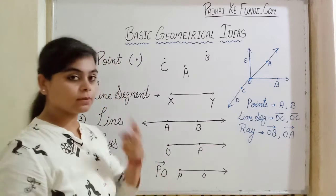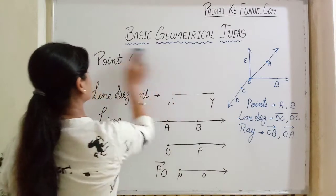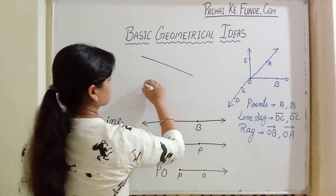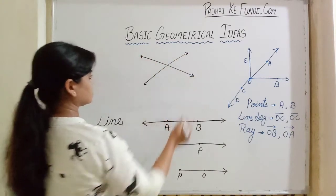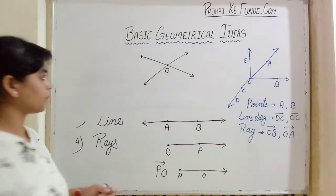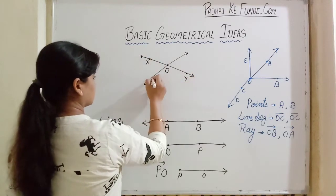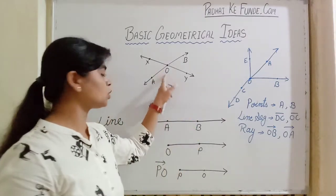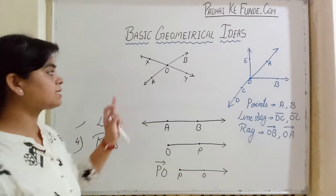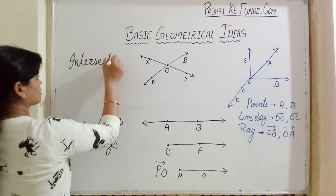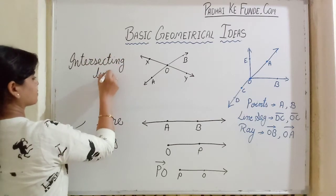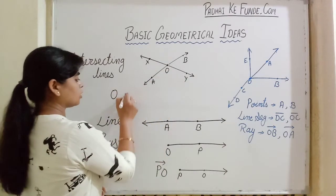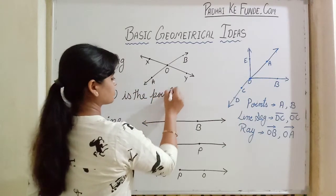Other than this, if we talk about two lines or two line segments, then if we have two lines which cross each other at any point, let us name the point O. Suppose this line is XY and this line is AB. So line XY and line AB, as they are meeting at one point, XY and AB are intersecting lines. The point where these lines meet is called the point of intersection. Here, O is the point of intersection.